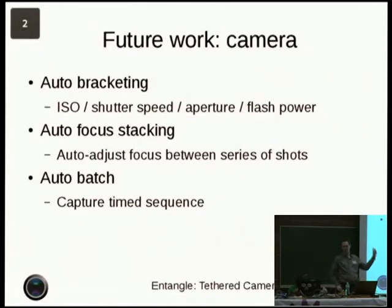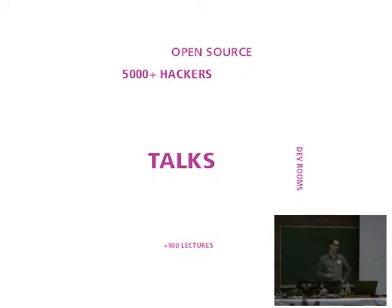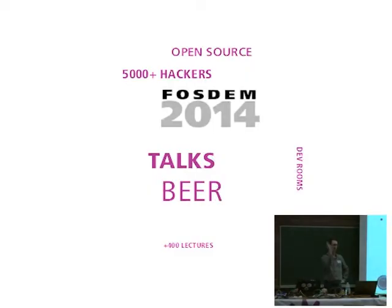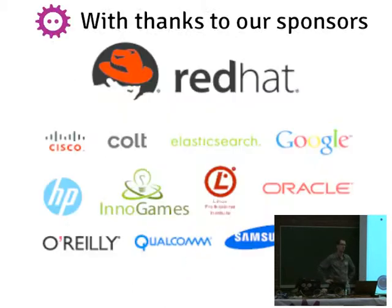The last idea I've got is a kind of batch mode, which is to just take a whole series of shots — timed exposures with a timed gap between each shot. This is a useful thing you need to do if you're doing astrophotography and you want to take a hundred shots spread over the course of an hour or two.